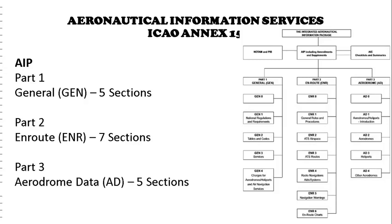General 2 consists of tables and codes, measuring systems, aircraft markings, holidays, abbreviations used in AIS publications, chart symbols, ICAO four-letter location indicator lists, radio navigation aids available, conversion tables, and sunrise and sunset tables.